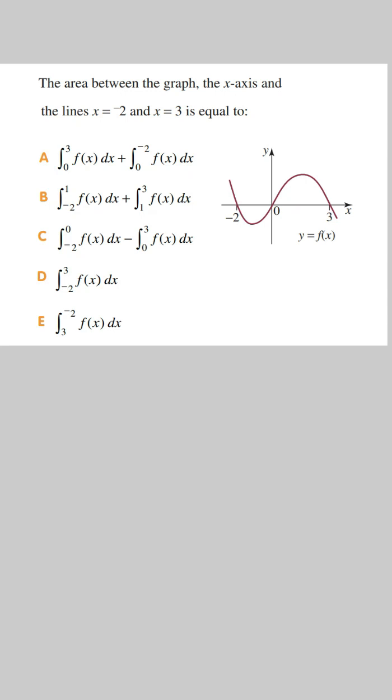For this question we've got the area between the graph, the x-axis and the lines x equals minus 2 and x equals 3 is equal to. Looking at the graph, the region we're interested in is these two regions.